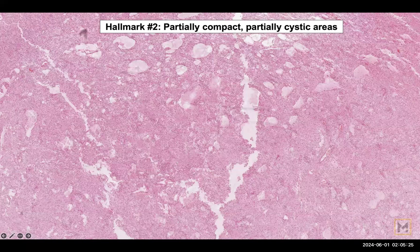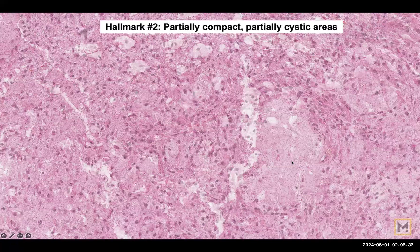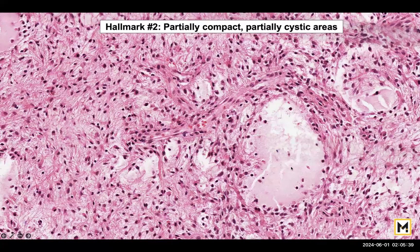A higher magnification of the same will demonstrate that even within the cystic areas you will see the compact cells that make up the pilocytic astrocytes. If you further enlarge the same field, you can see the cystic areas filled with some proteinaceous fluid, but you can also appreciate the bipolar astrocytes everywhere along with the pilocytic fibers — the astrocytic fibers.